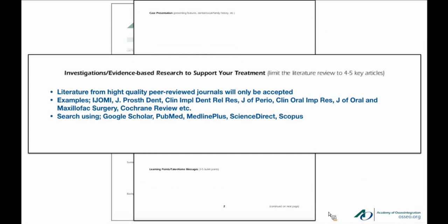If you're not familiar with how to access these articles, it's very easy. One good tool is Google Scholar. If you're writing about immediate loading, just type in keywords like 'immediate loading, dental implants,' and a whole list of articles will come up. You can set the date range as well. If you don't have access to a university library or journal subscription, you'll typically only get abstracts — but that's usually good enough. Other good sources include PubMed, Medline, ScienceDirect, and Scopus.